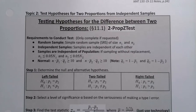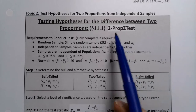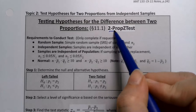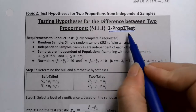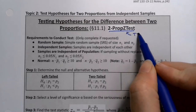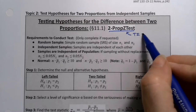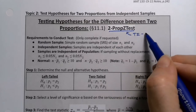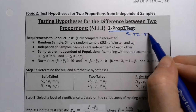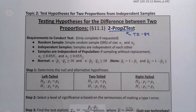We're going to begin our inference on two population parameters with a hypothesis test for the difference between two population proportions. In the calculator, that's called a 2-prop z-test, but it'll be called something different on StatCrunch, and I'll show you that in just a minute.